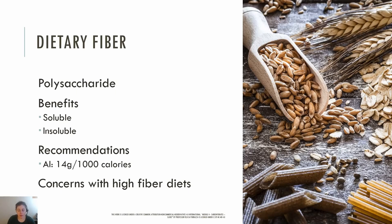Insoluble fibers do not dissolve in water and can be found in seeds, whole grains, celery, legumes, and the skin of fruits and vegetables. Insoluble fiber has been shown to reduce the risk of constipation by creating a softer, bulkier stool and also aiding in decreasing transit time. Lignin, cellulose, and hemicellulose are common types of insoluble fibers.